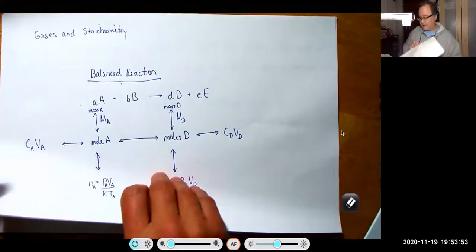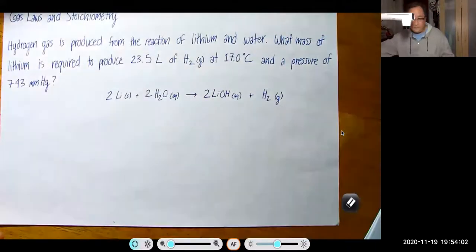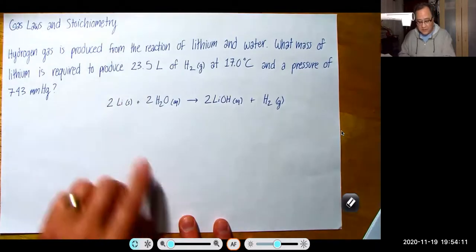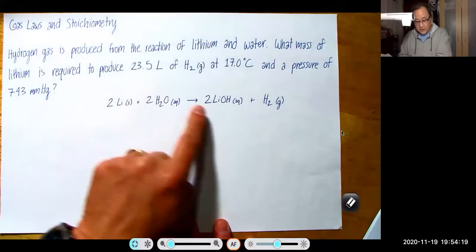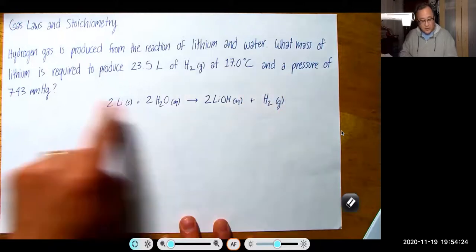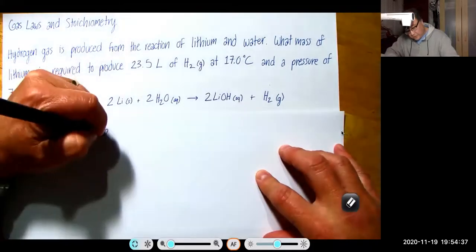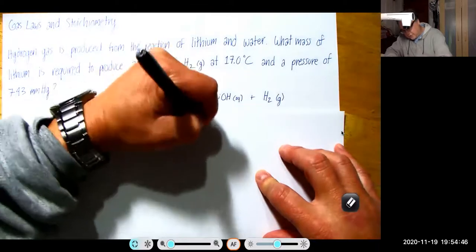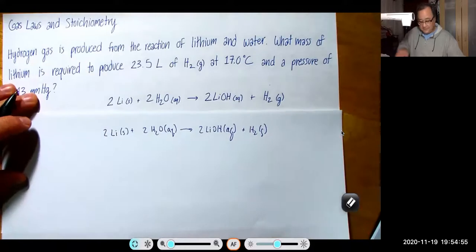So let's take a look at a problem involving this. Gas laws and stoichiometry. Hydrogen gas is produced from the reaction of lithium and water. So what I'm going to do here is write the equation out. Two lithium solid plus two H2O aqueous gives you two lithium hydroxide aqueous plus H2 gas. That's what we're given as the balanced reaction.